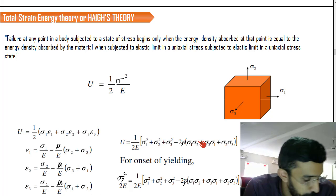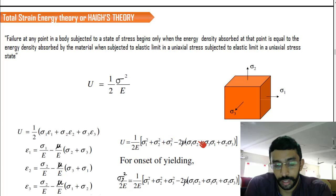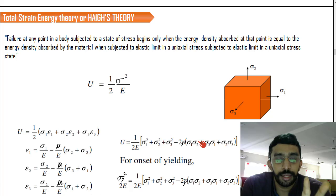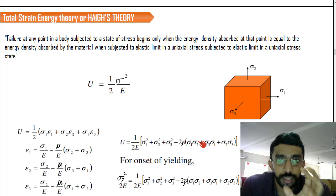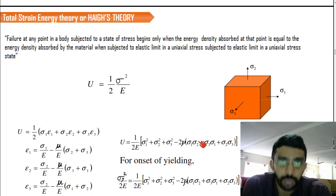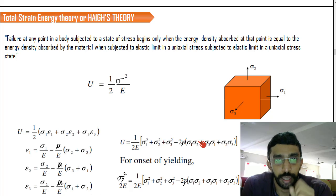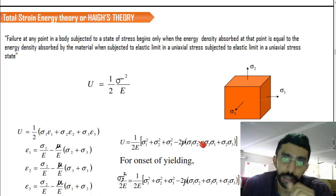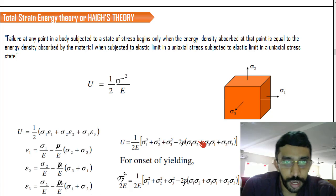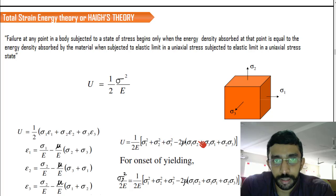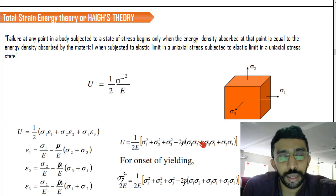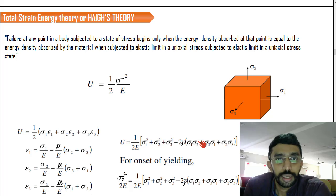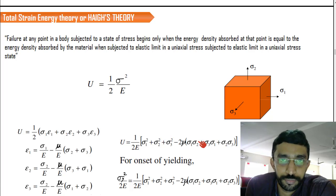This definition may seem confusing, but it is very simple. You test a material using a UTM — a uniaxial tension test — and find the yield value of the material. Using this yield value at the elastic limit, you calculate the strain energy at the yield point. Then you calculate the energy developed within the material due to external loads and compare it with the energy at the yield point. Everything is compared with the yield value.